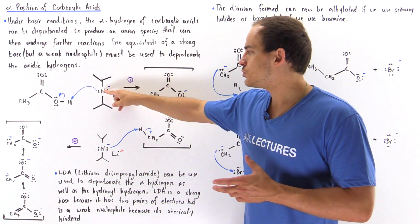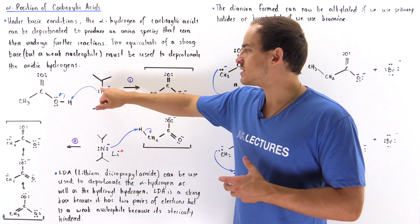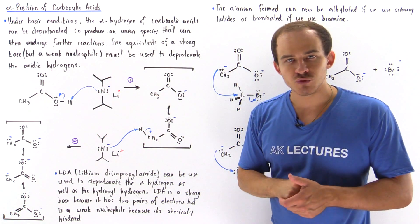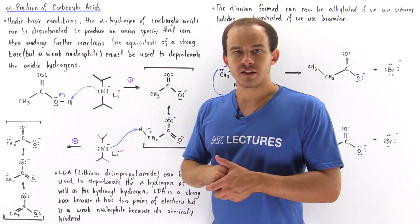We basically have a nitrogen with two lone pairs of electrons and two isopropyl groups attached to that nitrogen. We also have the lithium that interacts with the nitrogen electrostatically.